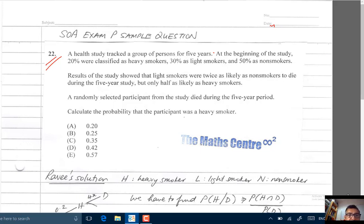Again, 20% as heavy smokers. I'm going to call heavy smokers H, 30% as light smokers, let's call them L, and 50% as non-smokers, let's call them N.